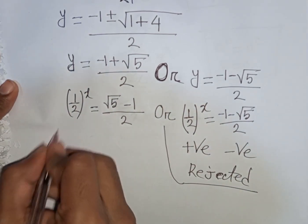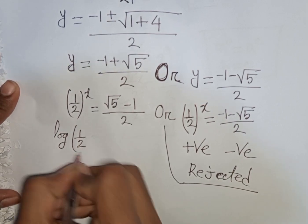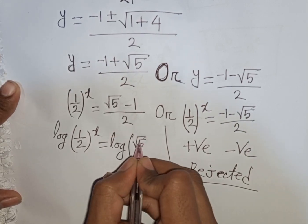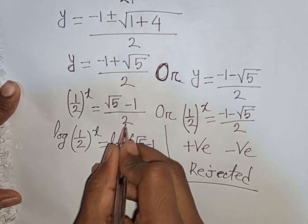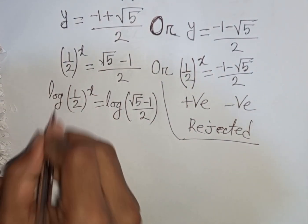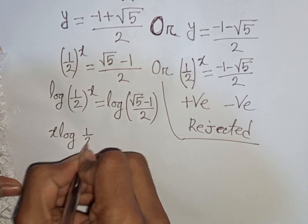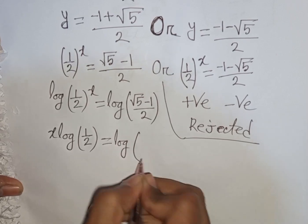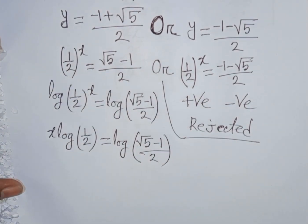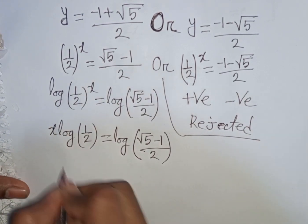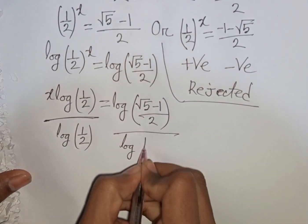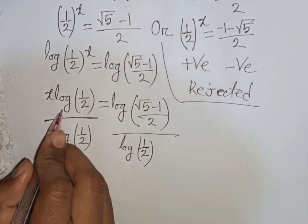Now we take log of both sides: log((1/2)^x) = log((√5 - 1) / 2). The power X moves in front, giving x·log(1/2) = log((√5 - 1) / 2). Dividing both sides by log(1/2), the log(1/2) cancels.